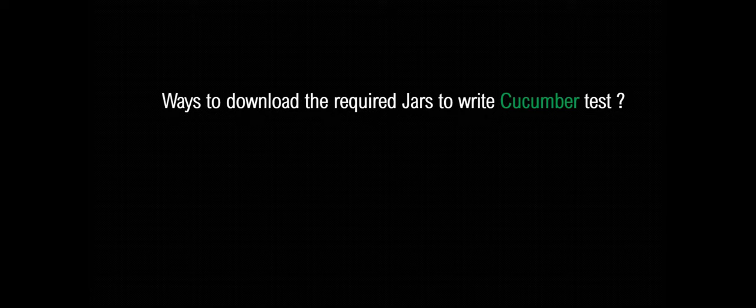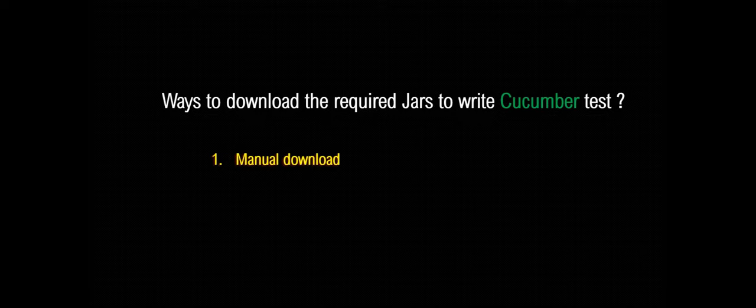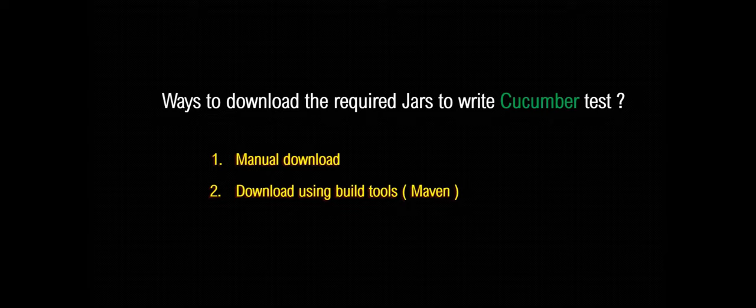Now we will see what are the different ways that you can download the Cucumber jars and use them to write and run Cucumber feature files. The first one is the manual download — you go to the Maven Central repositories or other places where the jars are available, download them, and link them with your project. The second way is using a build tool, and in this video we are going to see that using the Maven tool.